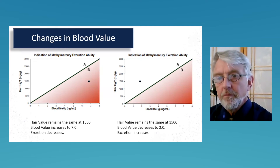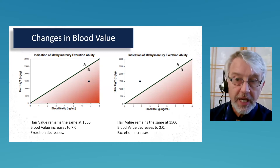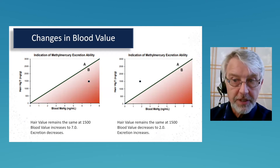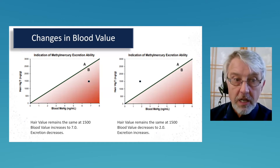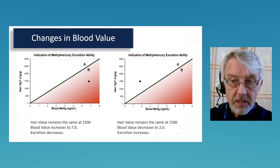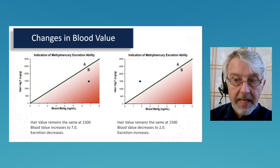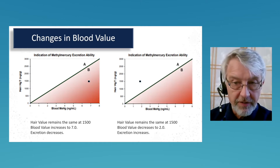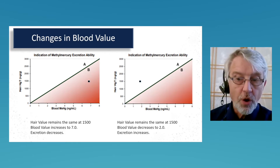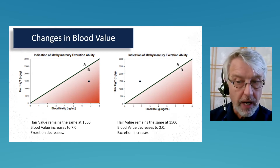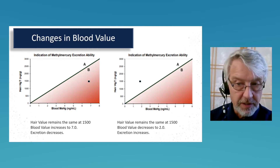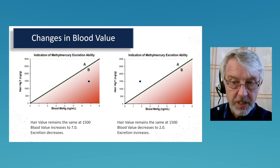This methylmercury excretion profile is sensitive to recent changes in fish and seafood consumption. A recent dietary exposure to fish or seafood may cause the dot to move farther to the right, making excretion appear lower than it really is. Conversely, if fish and seafood consumption was consistent over the last few months but severely curtailed in the weeks prior to the blood draw, the dot may move farther to the left relative to the hair value. We advise patients not to eat any fish or seafood for three to four days prior to the blood draw, and to inquire about their history of fish and seafood consumption over the last three months.